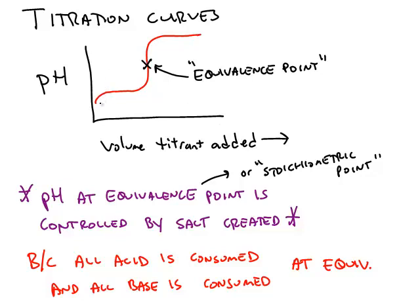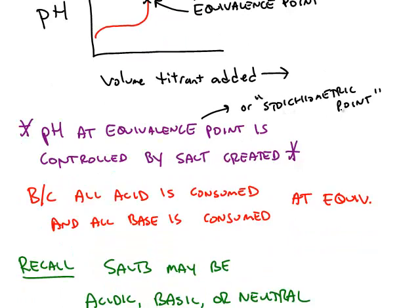A typical titration curve has an S shape to it, so it can either start at an acidic pH and end basic, or it could start basic and end acidic. What we're focusing on are the areas around the equivalence point, and the equivalence point is also called the stoichiometric point.